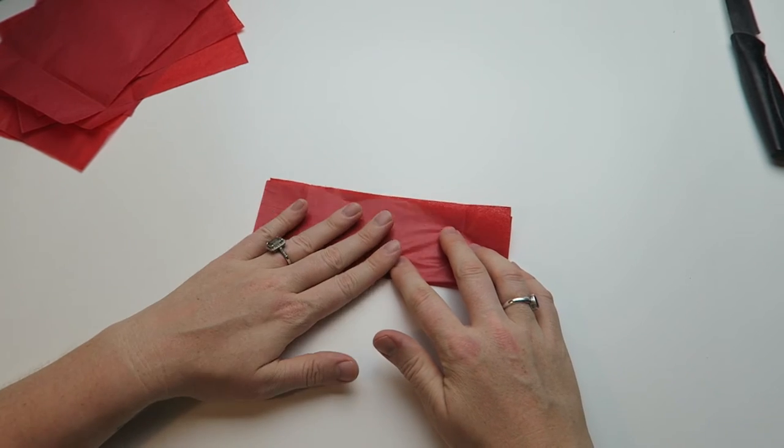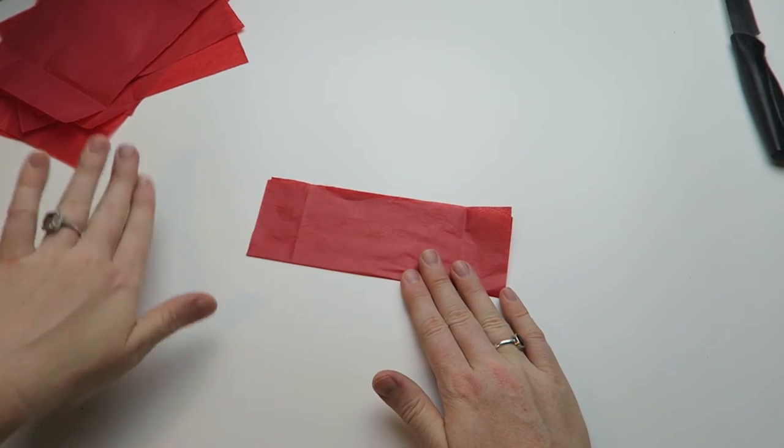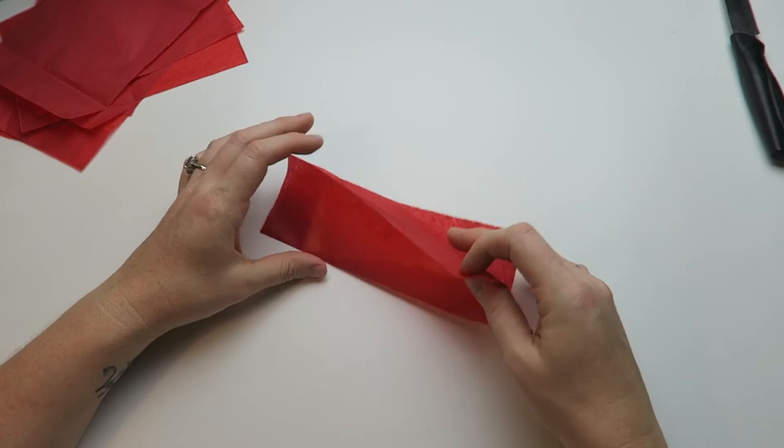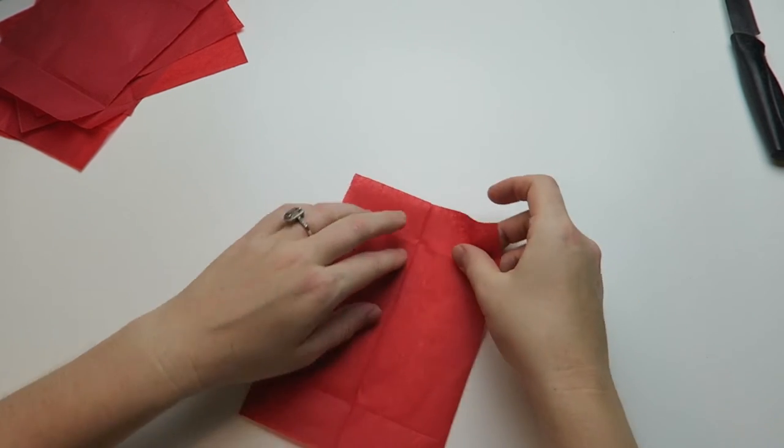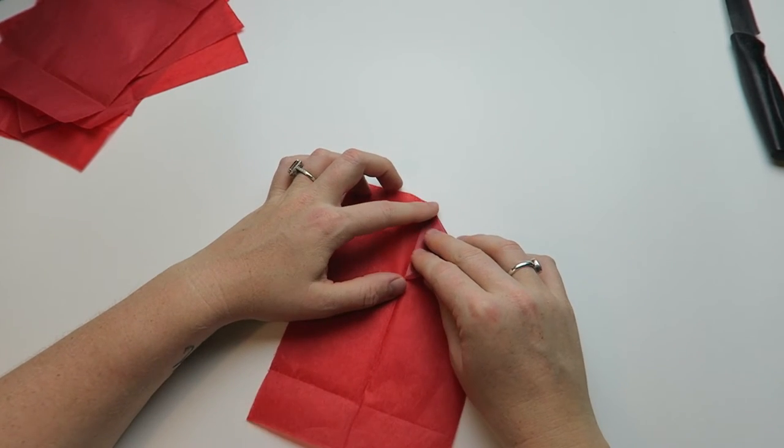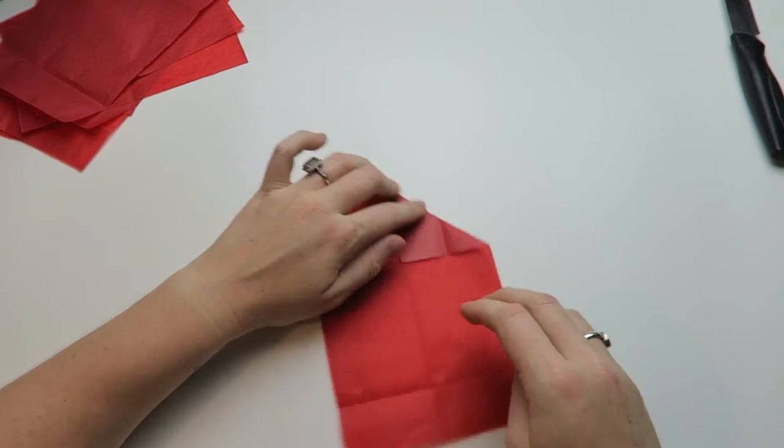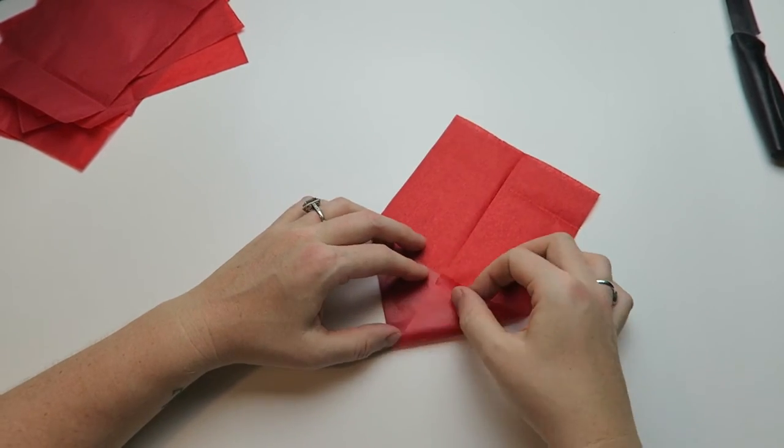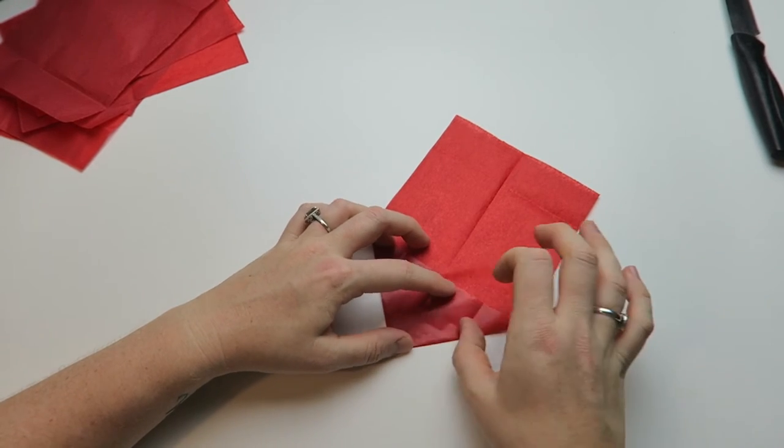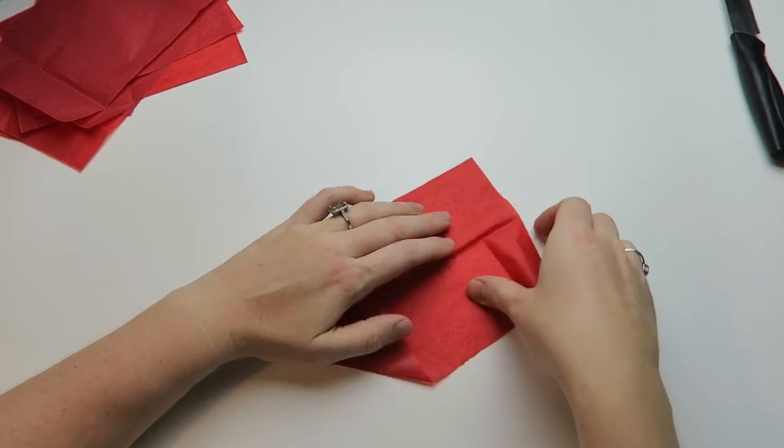Now we're starting with the first rectangle, we're folding it in half, and then we take one tip and fold it down to the center. We repeat that with all the other tips as well, with all the other corners.